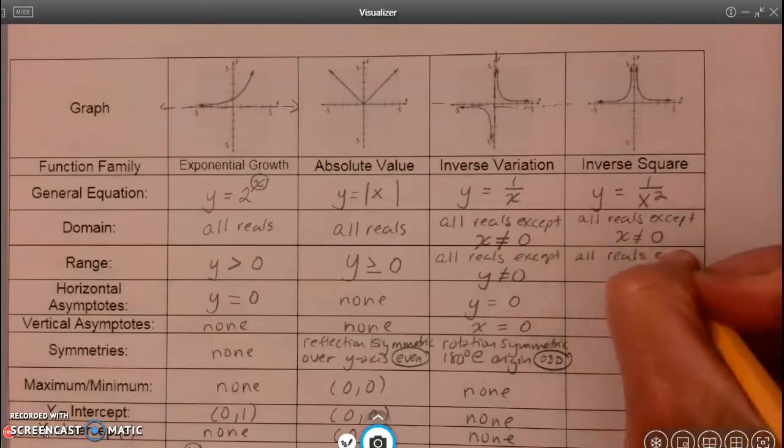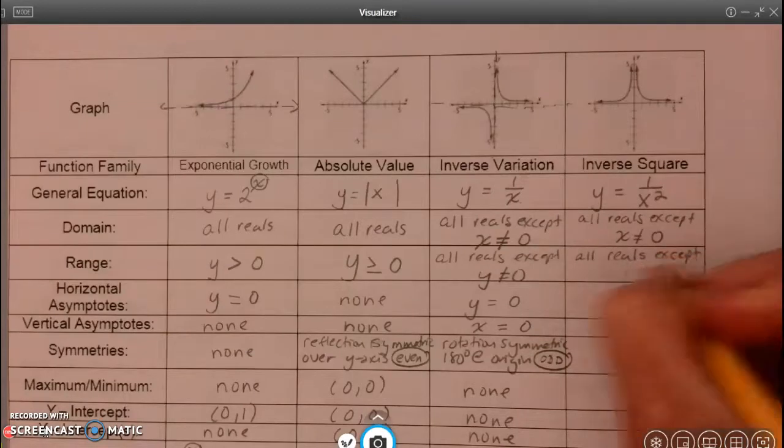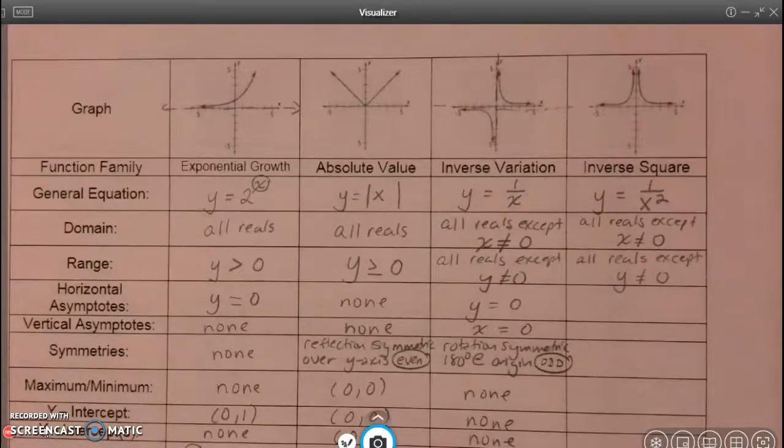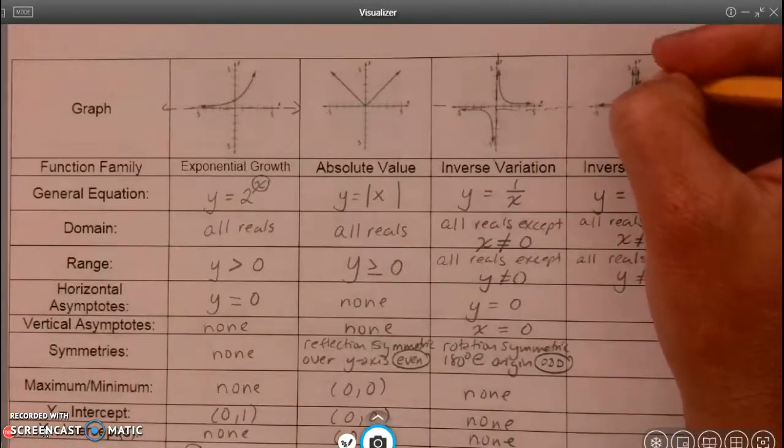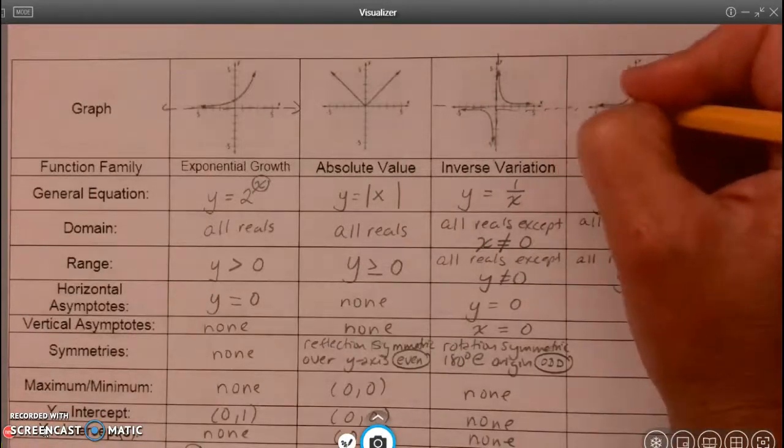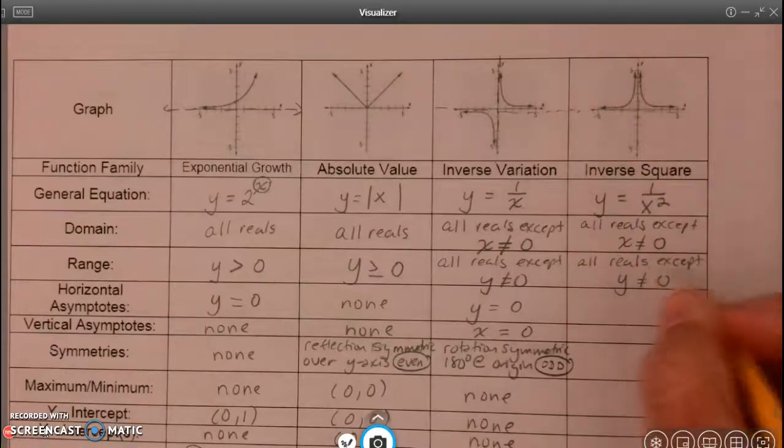So all reals, except y cannot equal zero. So the asymptotes, again, because x and y can never be zero, you're going to have asymptotes there.